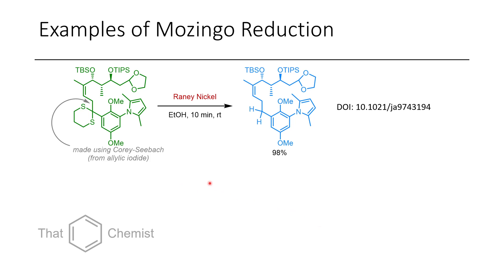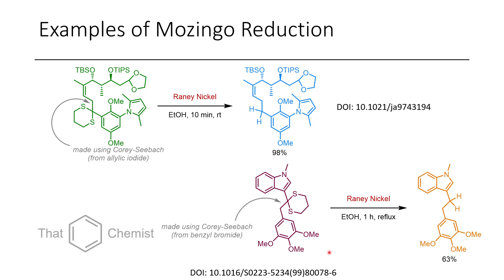Some examples of the Mozingo reduction: here you can see a complex natural product intermediate where a dithiane is reduced to a CH₂ in the presence of many other functional groups. Another interesting example shows both an indole and an electron-rich arene, where the dithiane is selectively reduced using Raney nickel in short reaction times and in decent conversions.